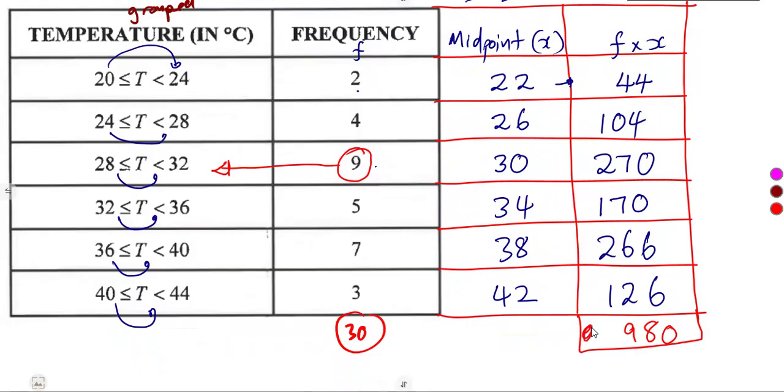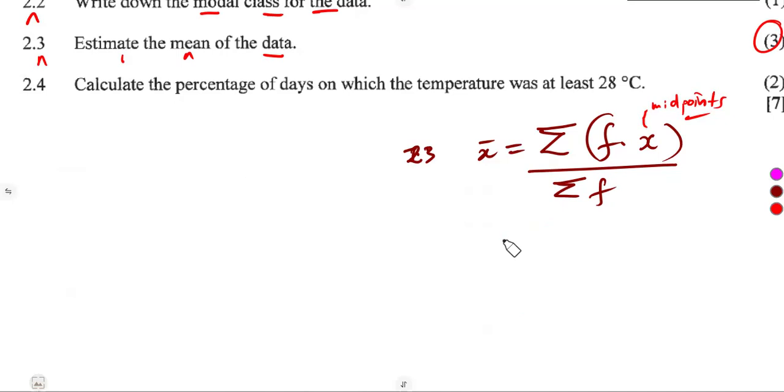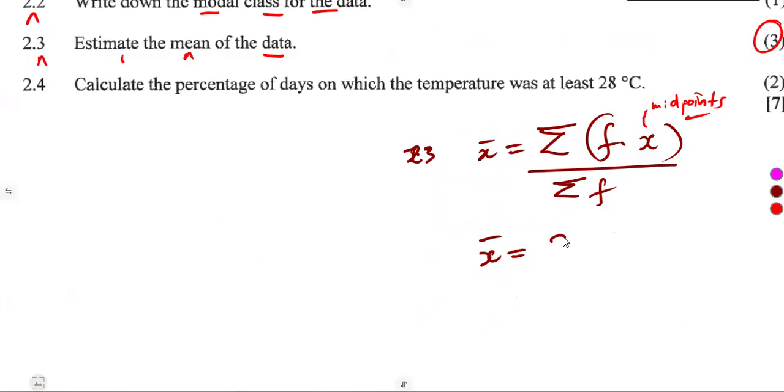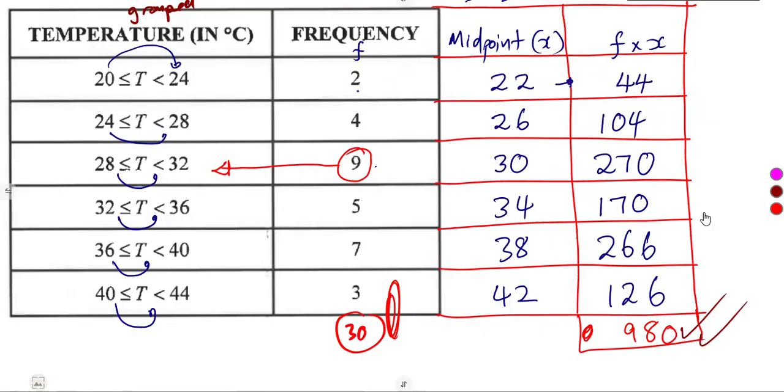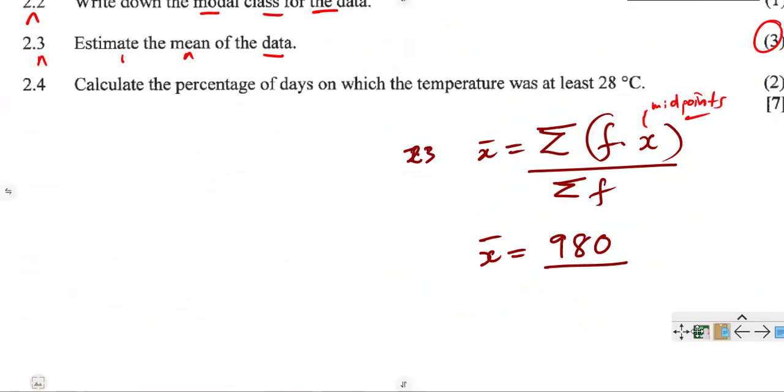Using the sum of this and the sum of the frequencies, the estimated mean can be determined from the formula that we have stated before. So you take this sum, 980, over the total frequencies, that was 30. The number of days that we had all together. This was 30. So that was over 30.